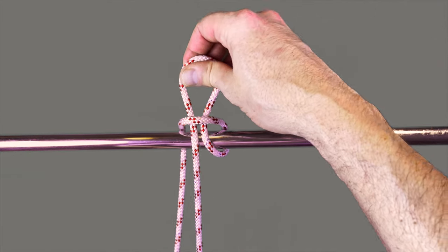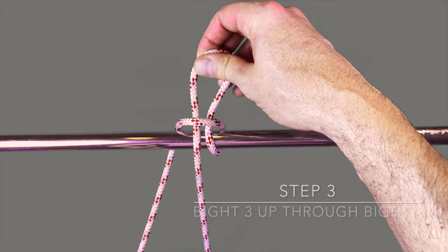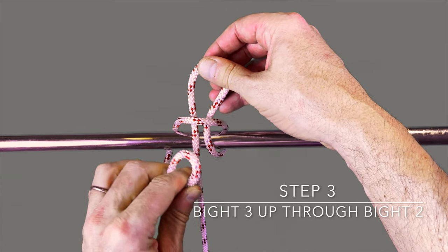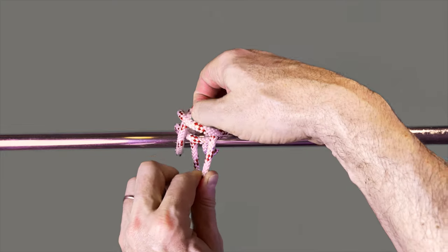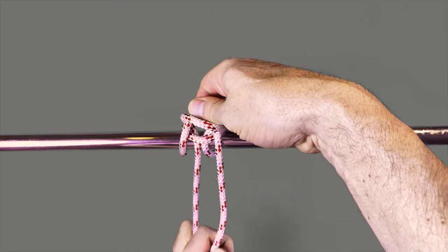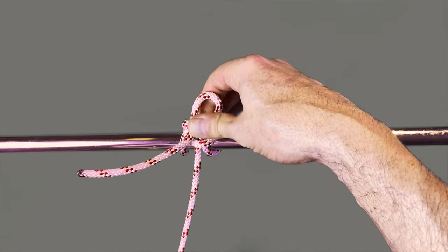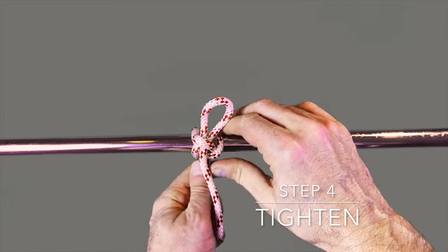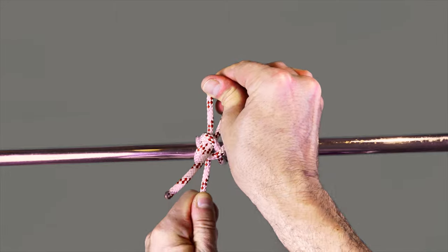For step three, you want to take the working end, creating a third bight, taking it up through the second bight before pulling all ends tight to finish the highwayman's hitch.